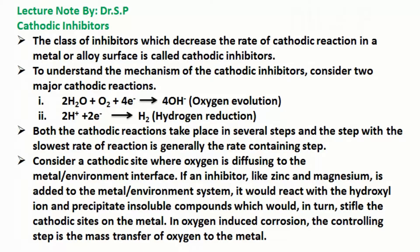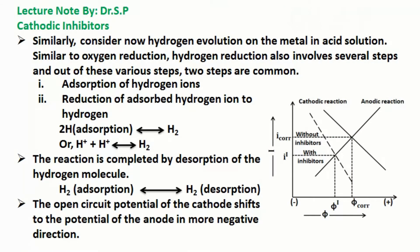In oxygen-induced corrosion, the controlling step is the mass transfer of oxygen to the metal. Similarly, consider hydrogen evolution on the metal in acid solution. Like oxygen reduction, hydrogen reduction also involves several steps, two of which are common: first, adsorption of hydrogen ions, and second, reduction of adsorbed hydrogen ions to hydrogen. The reaction is completed by desorption of the hydrogen molecule.